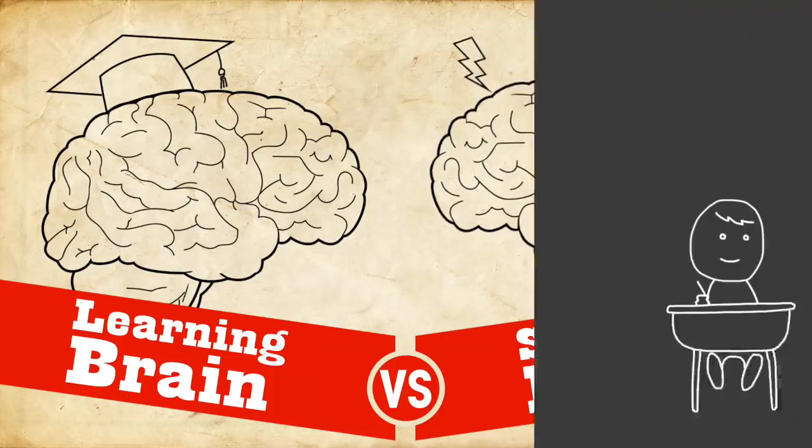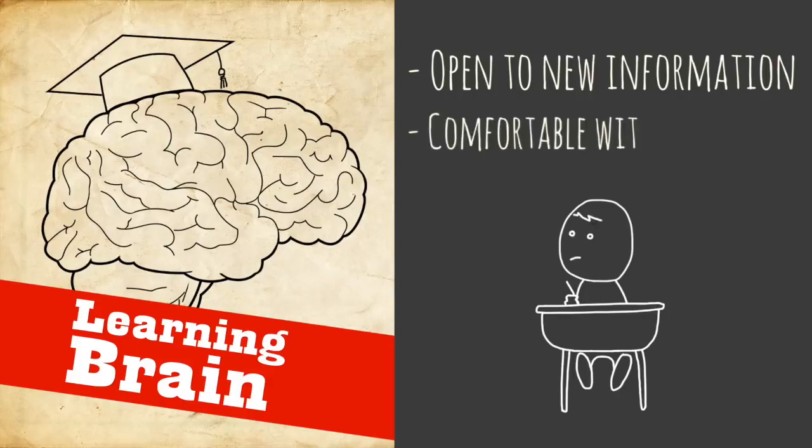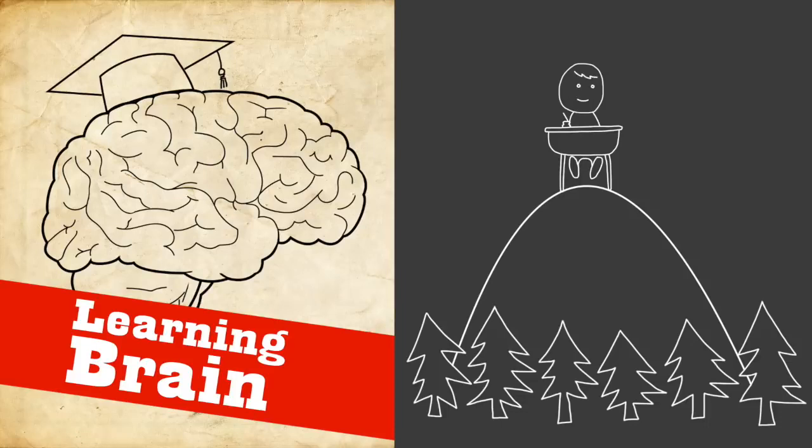So learning brain is this brain that's open to learning new information and it's completely okay with ambiguity and grayness and vagueness. And it sees the big picture. It pulls back and is on the balcony, can look over the forest and figure out what's going on.